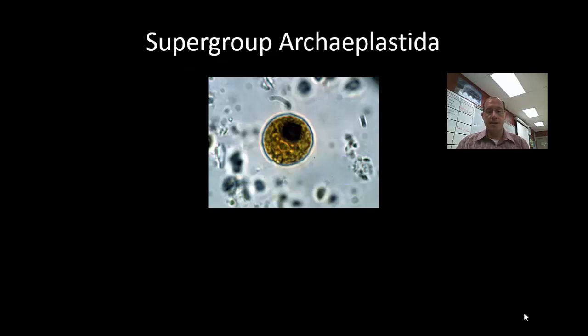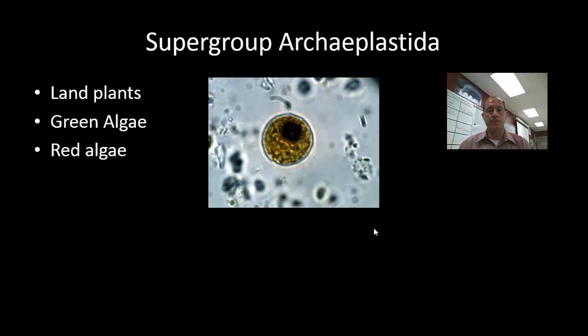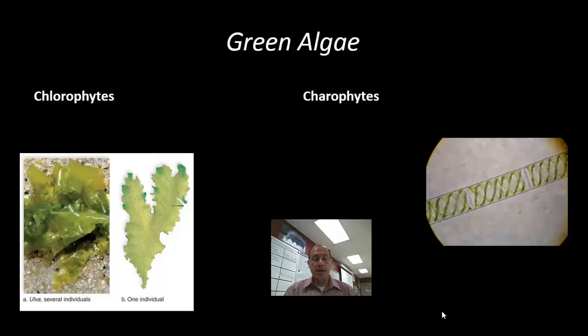So the supergroup Archaeplastida includes land plants, but it also includes green algae. And so what you see here is Chlamydomonas, which is a single-celled algae that is actually motile, meaning that it moves. And so while you can't see it in the picture here, this organism has a flagella, and so it is able to move similar to how we would see an animal. The third group in the Archaeplastida is what is called the red algae. And so let's talk about the green and red algae. Scientists group these organisms along with land plants primarily because they have similar chlorophyll, chlorophyll A and chlorophyll B. They're also included because they have a cell wall that's made of cellulose, and then they also store energy in the form of starch.